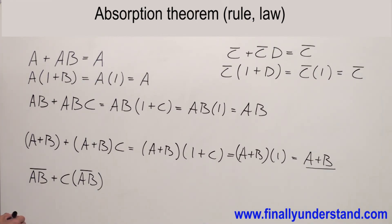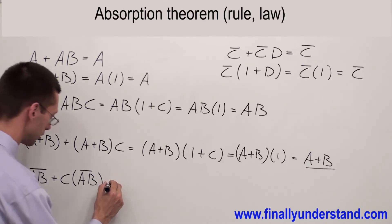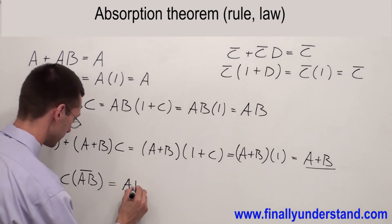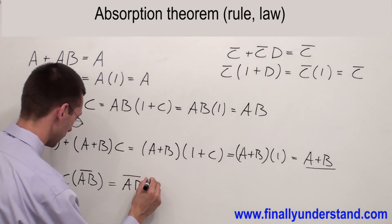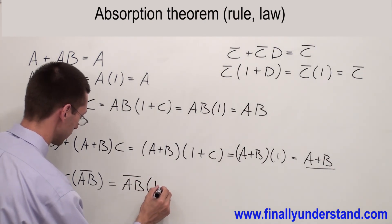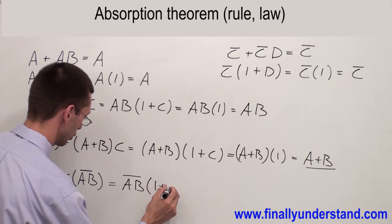Another example. I can factorize AB NOT. And inside of the parenthesis I'm going to have again 1 OR C.